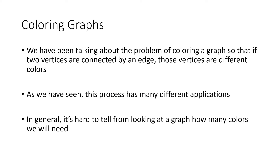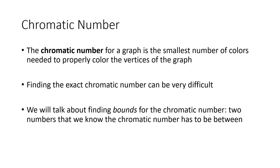So just to review, we've been talking about the problem of coloring a graph so that if two vertices are connected by an edge, those vertices are given different colors. And as we've seen, this problem has a lot more applications than just actually filling in the regions on a map. But in general, it's actually hard to tell from just looking at a graph how many colors we're going to need. So we call that number the chromatic number. The chromatic number for a graph is the smallest number of colors needed to properly color the vertices of that graph.